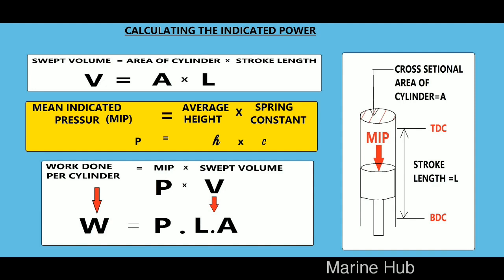When calculating the indicated power, first we need to calculate the work done. We already found the average pressure value, now we need to find the volume component, that is the swept volume. Once we multiply the mean indicated pressure by swept volume, we will get the work done in the power stroke.